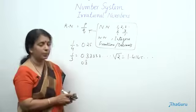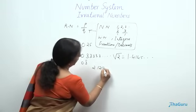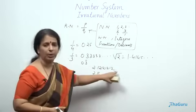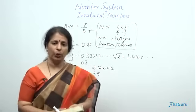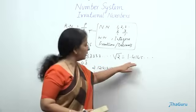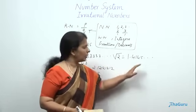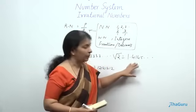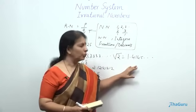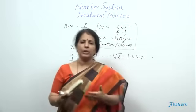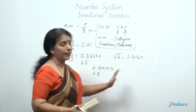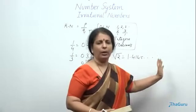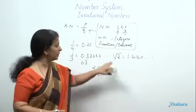In 0.333..., there is a pattern - 3 is repeated. There are also numbers like 2.121212... which can be written as 2.12 bar, where two digits are repeated. Sometimes 3, 4, or even 10 digits can be repeated. But for root 2, when computers tried to find its value and went to millions of digits, there is no repetition of any pattern. Root 2 is an irrational number.